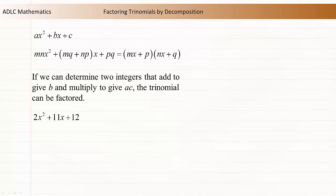Let's look at an example that uses numbers. We'll factor 2x² + 11x + 12. The a value is 2, the b value is 11, and the c value is 12.